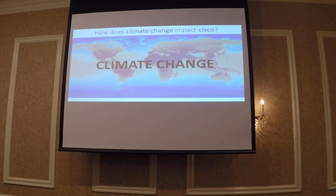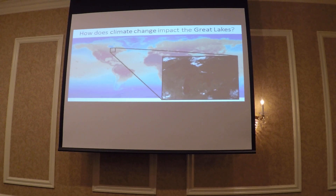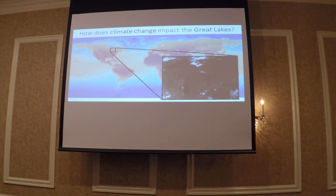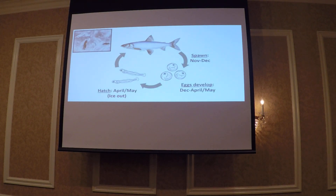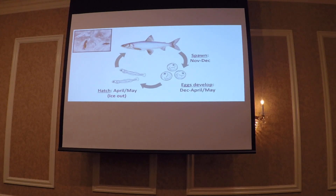Since we're specifically talking about the Great Lakes, we can zoom in there. We can frame it a little bit more by thinking about climate change impacts during a certain time of year. For cisco, that time of year is winter. We're focusing on winter because a crucial part of their life history is spawning their eggs in early winter and having those eggs incubate and develop throughout winter. And historically, winter includes ice — which is foreshadowing to where I'm heading.